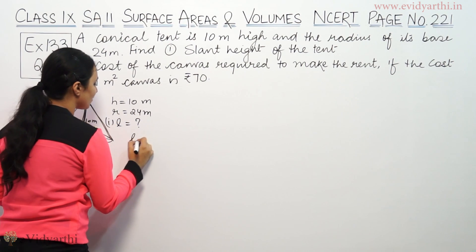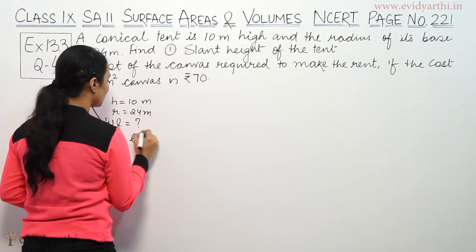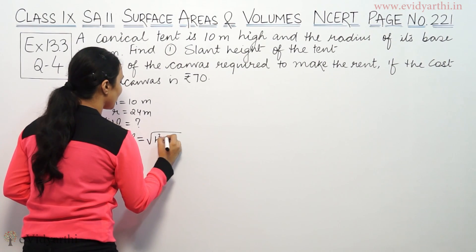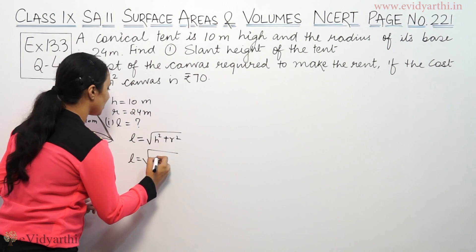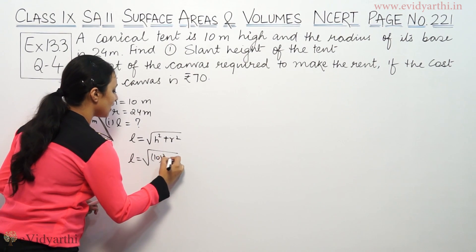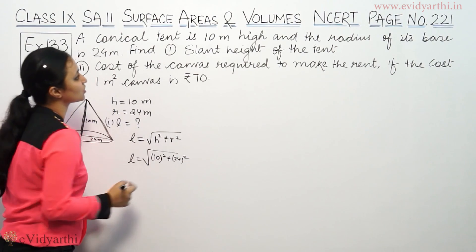For slant height, we use the formula: L equals square root of h squared plus r squared. So L equals square root of 10 squared plus 24 squared.